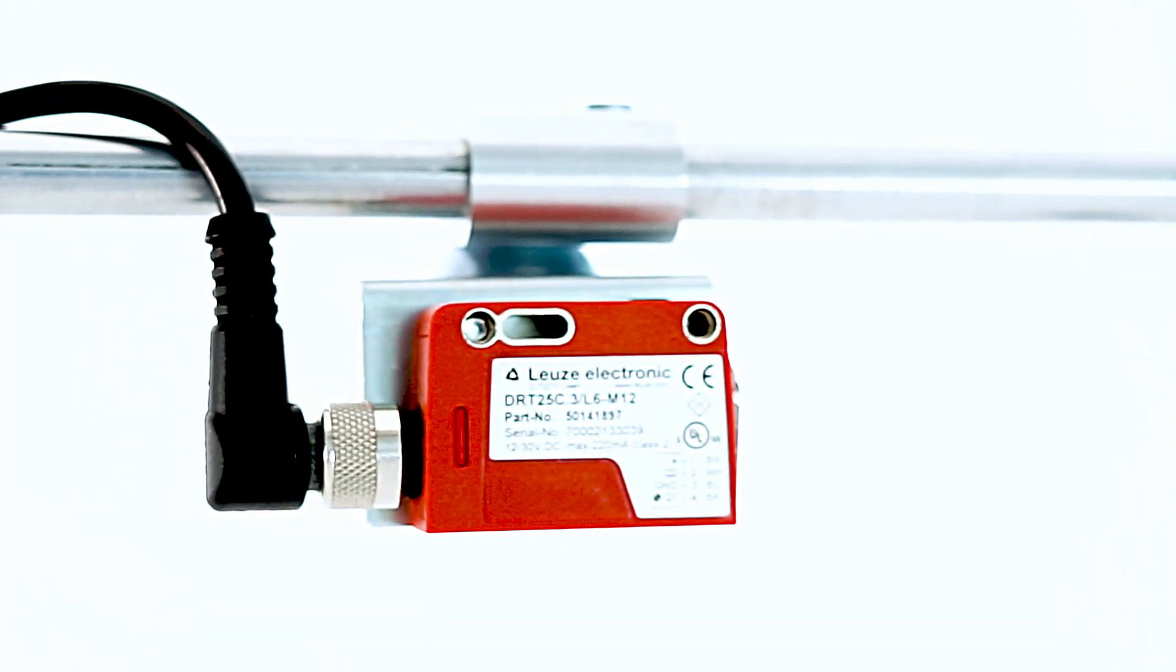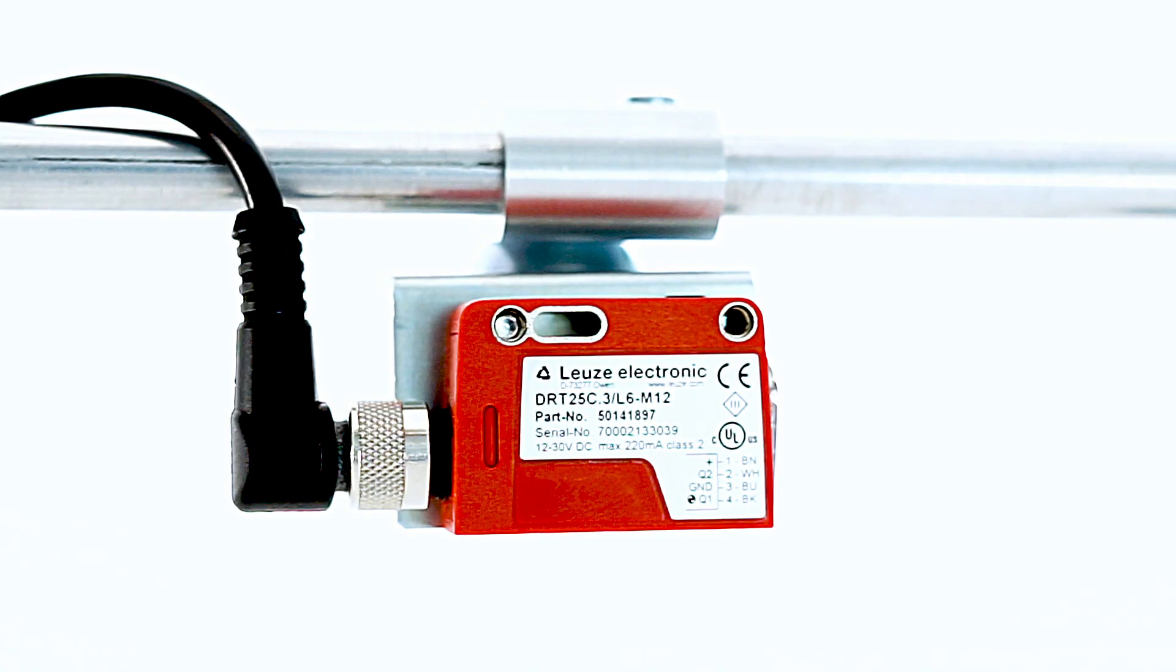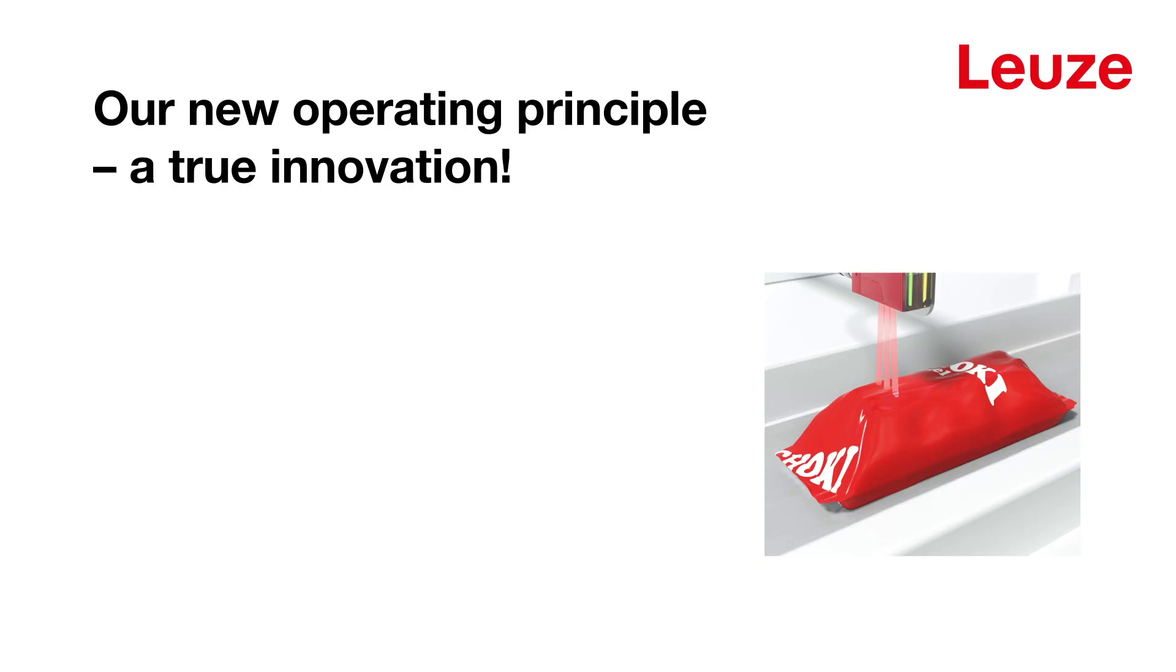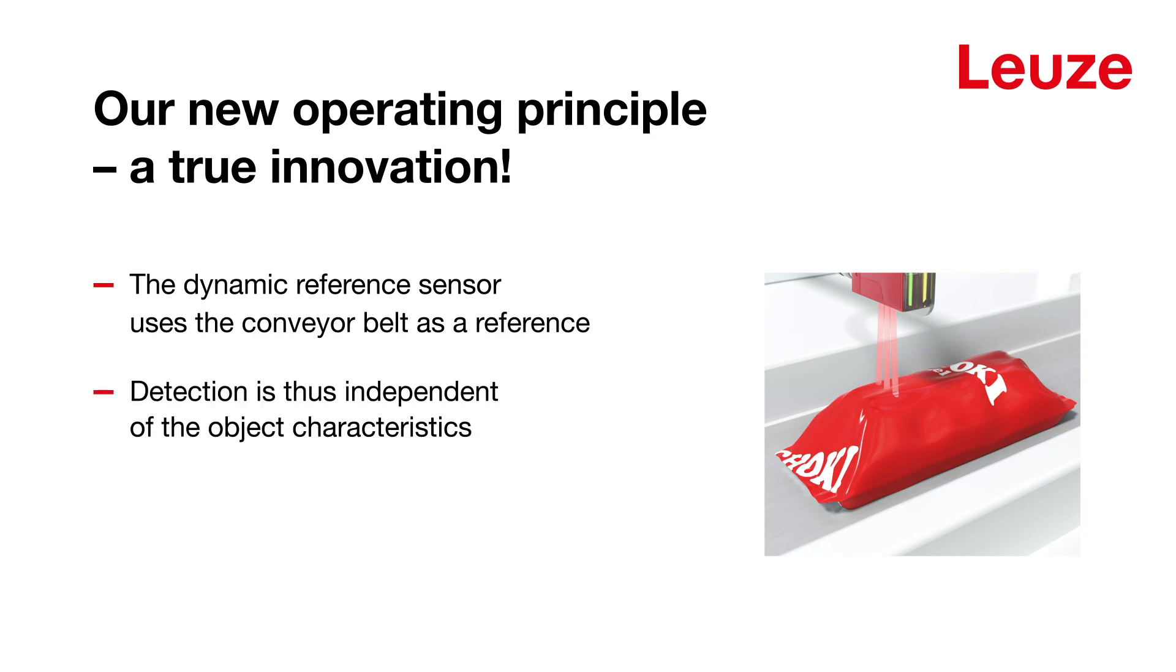With our innovative technology, the Dynamic Reference Diffuse Sensor reliably detects any object. It doesn't use the product as a reference, but rather the conveyor belt. As a result, detection is independent of the object characteristics.